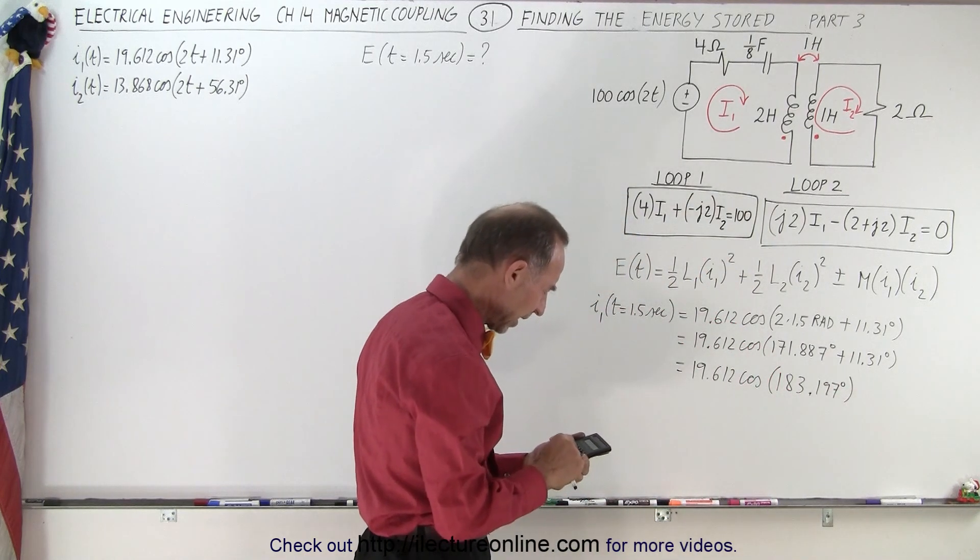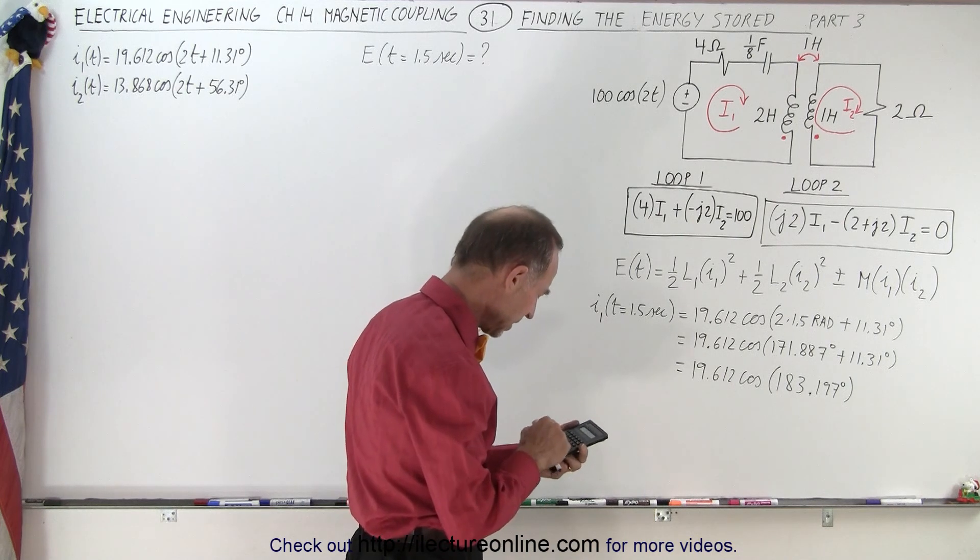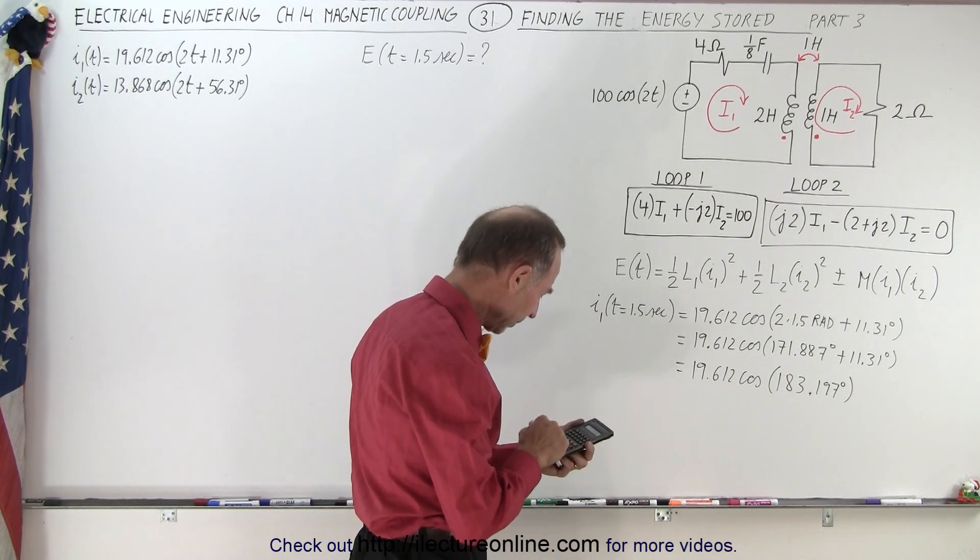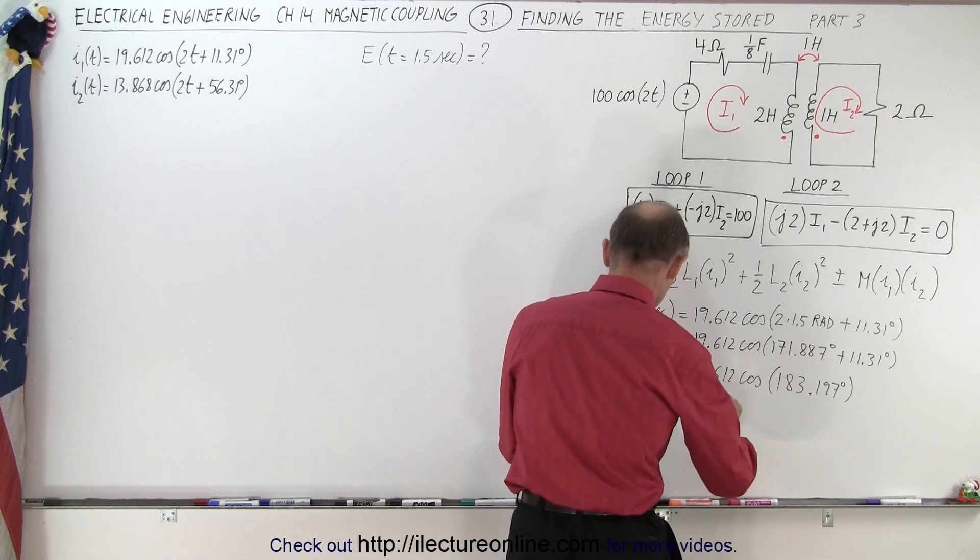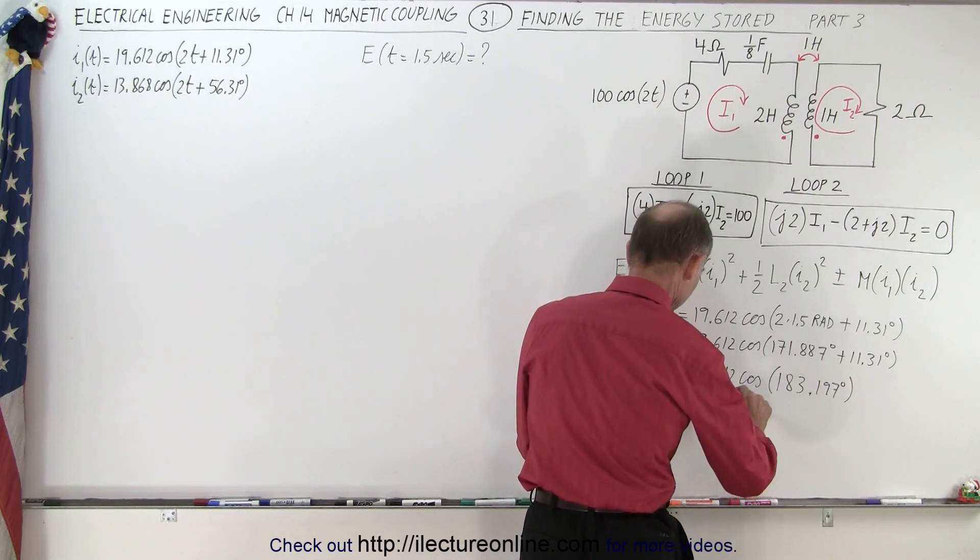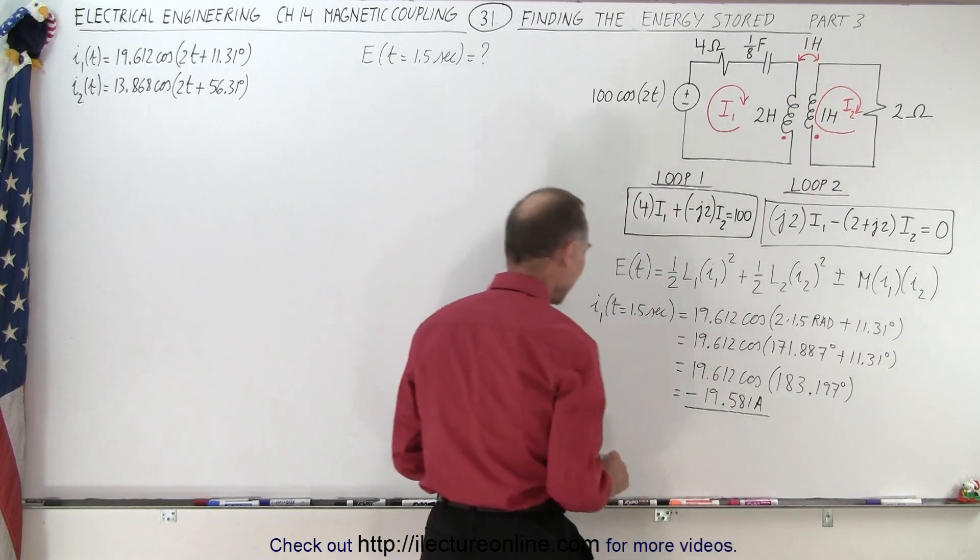When we take the cosine of that, we get almost negative 1 times 19.612, and that gives us a current of minus 19.581 amps. So that's I1.